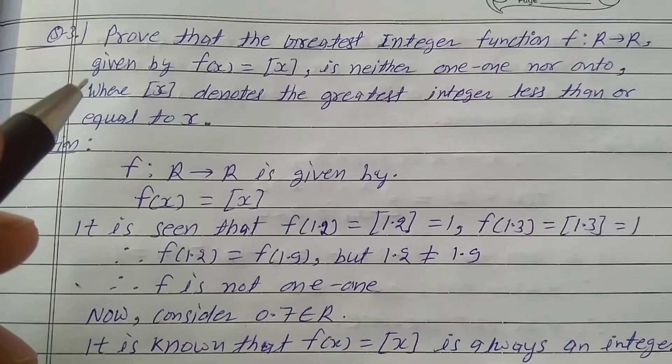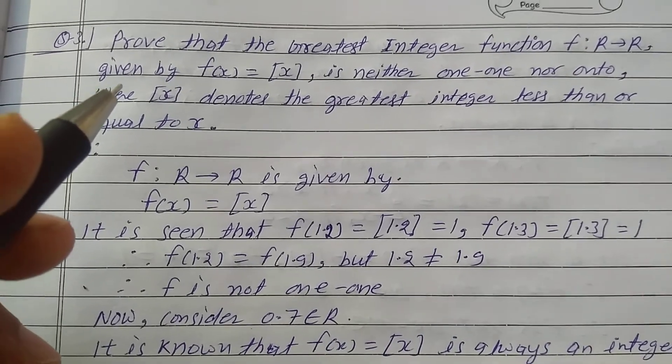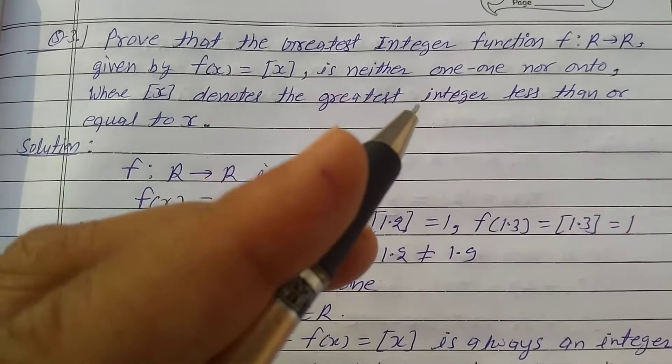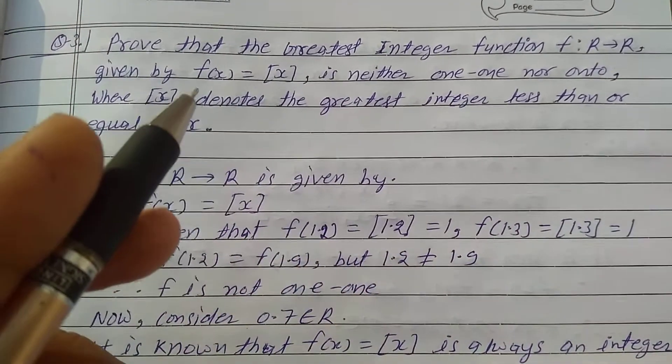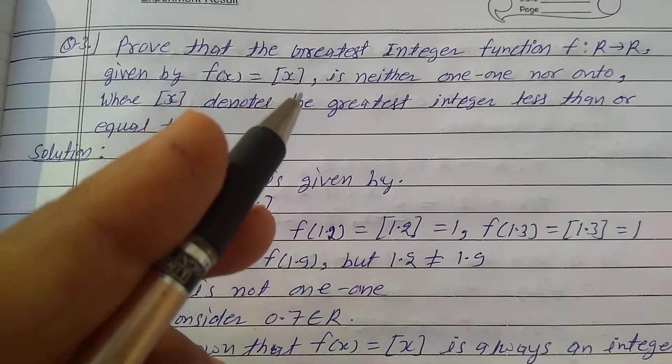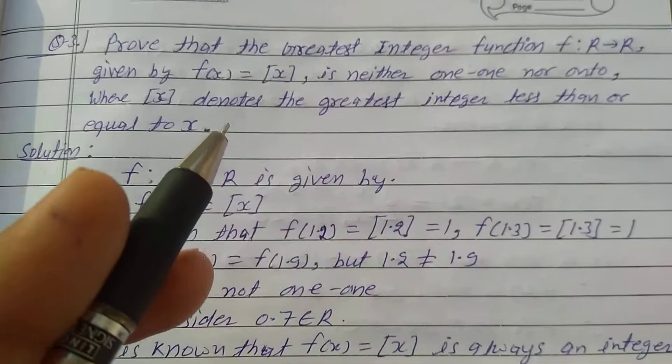I explain question number 3, Exercise 1.2, Class 12th. Prove that the greatest integer function f: R→R given by f(x) = [x] is neither one-one nor onto.